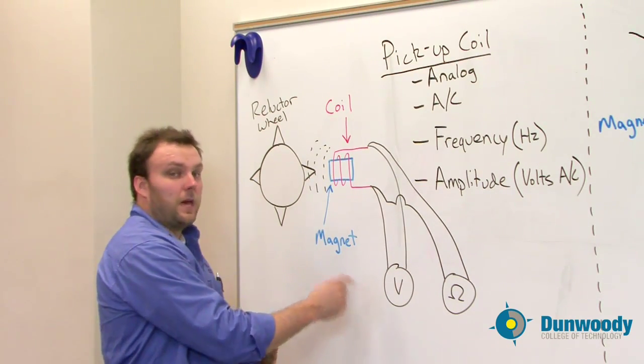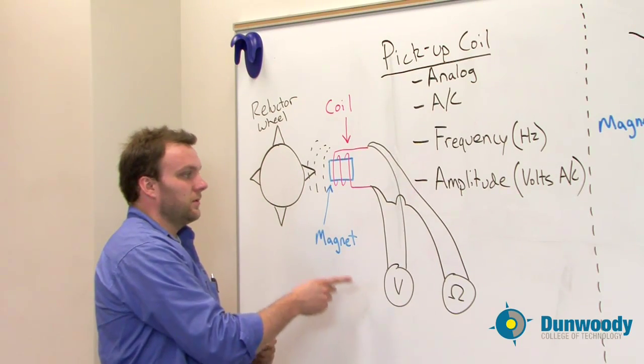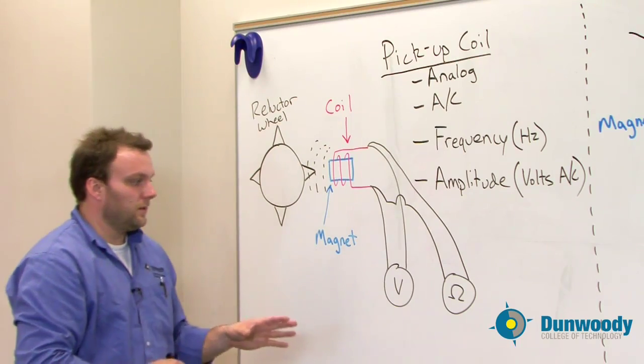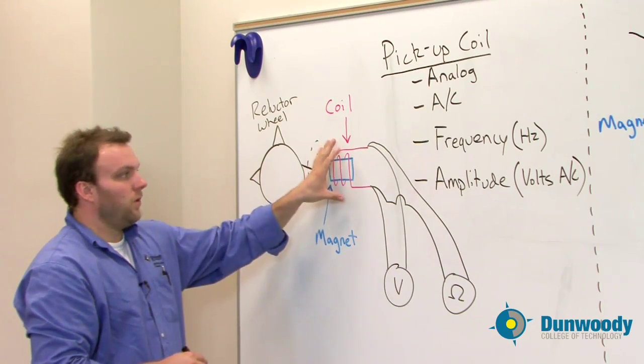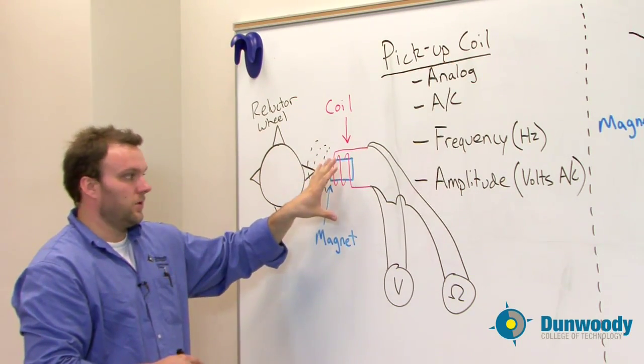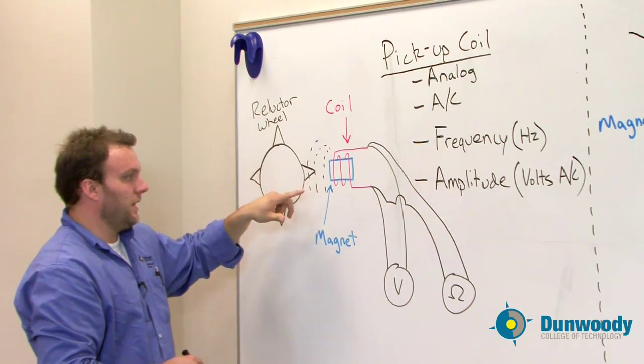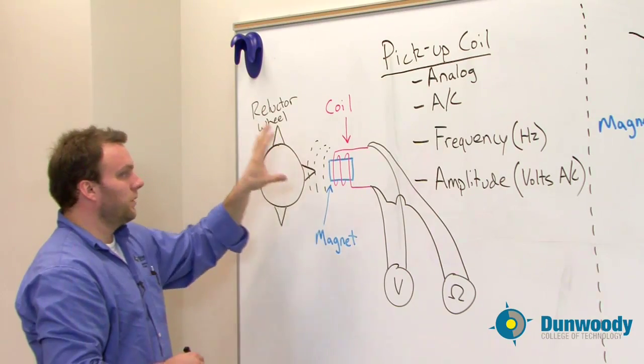We need to be doing the dynamic test, which is the better of the two tests, to test this type of system. The important part of this is the vehicle does not need to have power to this coil, nor would there ever be power to this coil. It creates its own power based upon the induction process through the magnet, the reluctor wheel, and the coil.